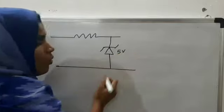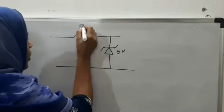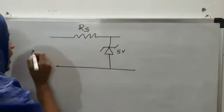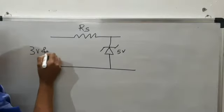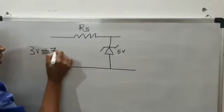The breakdown voltage is 5V. Here, we have to find the value of RS and the input voltage varies between 3V and 7V.